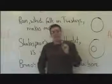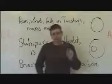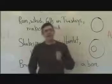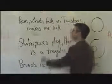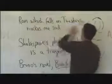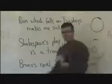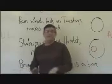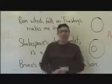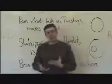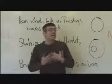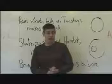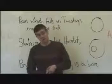If the "as opposed to" sentence works, that means the element you're talking about is restrictive, and if it's restrictive, there must not be commas. If the "by the way" sentence works, that means the element you're testing is non-restrictive, and it must be surrounded by commas.